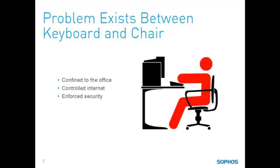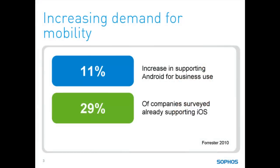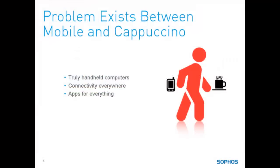But this scenario is changing, and these statistics are an indication of how. You can see the increase in support for mobile devices over just one year. Today it's more likely that the problem exists between their mobile and a cappuccino. People want to use the latest mobile technology to connect and work everywhere, including accessing business networks and data — probably on the same device they use for playing games or Facebooking.